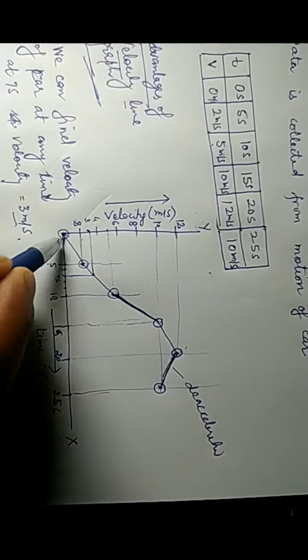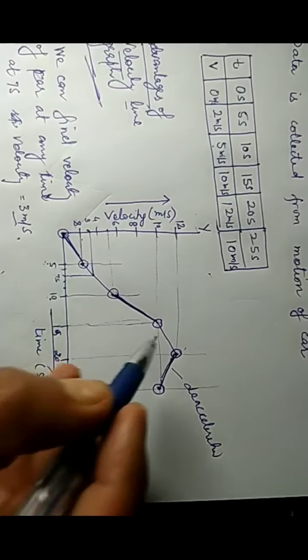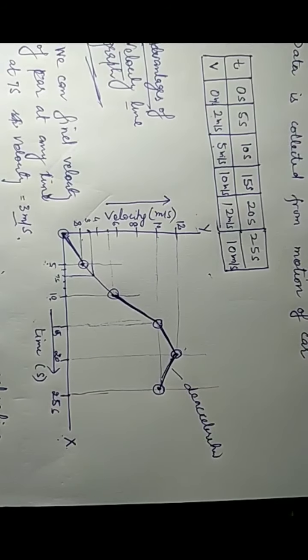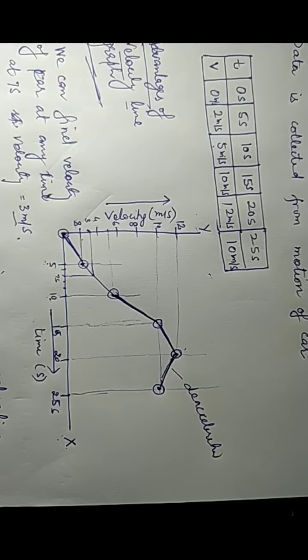So by knowing the slantness of the graph, I can tell in which time interval the acceleration is maximum, minimum, or negative.